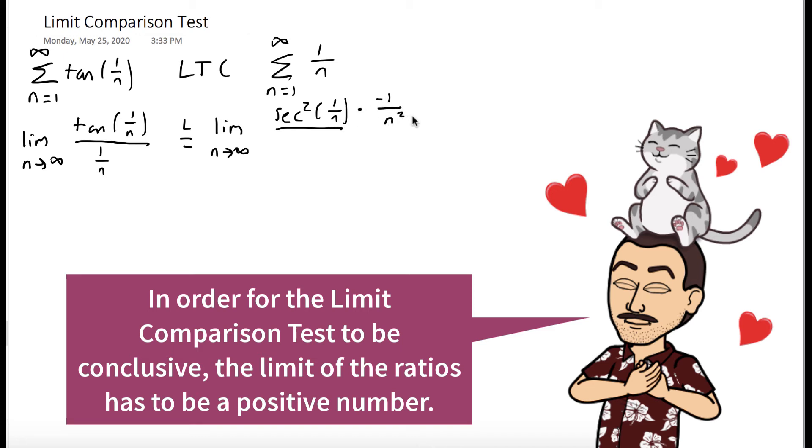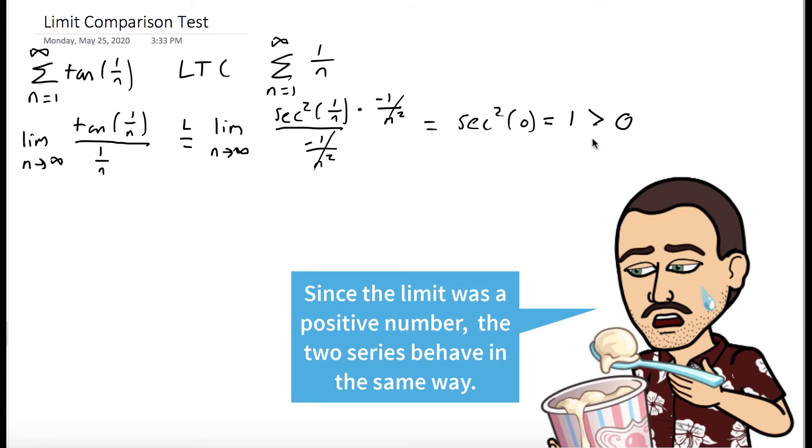Divided by the derivative of the denominator, which is negative 1 over n squared. Now notice the negative 1 over n squared cancel. So we could evaluate the limit as n goes to infinity of secant squared of 1 over n, which is just secant squared of 0, which is 1, which is greater than 0.